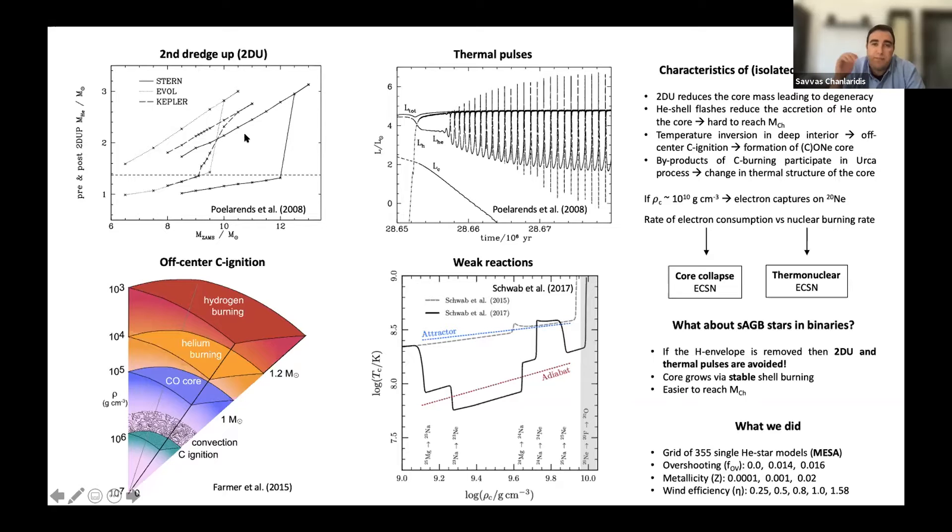Additionally, one of the key points of super-AGB stars is the occurrence of the second red giant branch. During this episode, the envelope convection deepens and finally penetrates into the core, reducing its mass as shown in this plot on the top left corner, where you see the mass before and after this mixing episode.